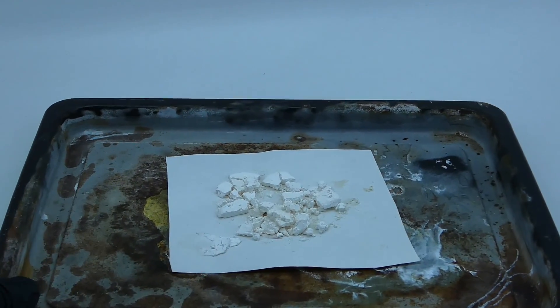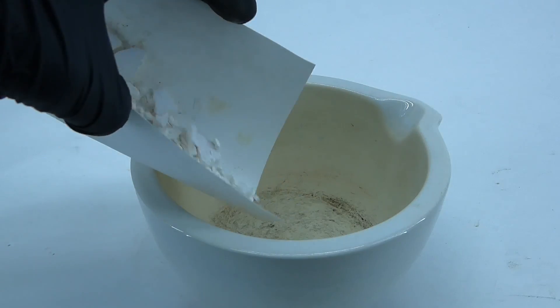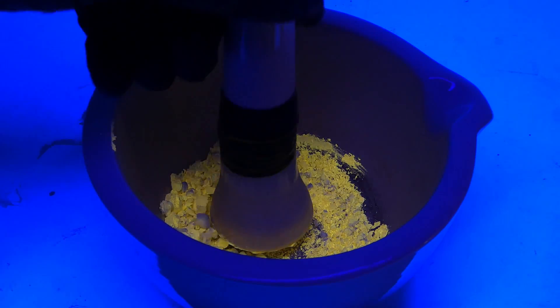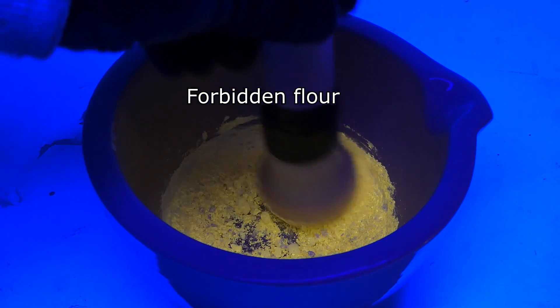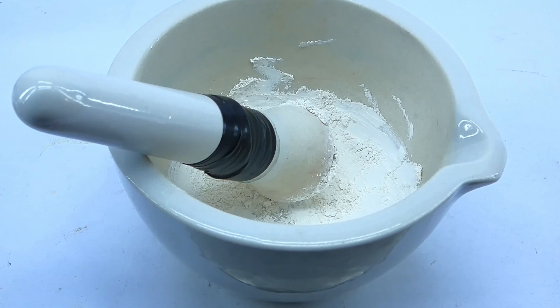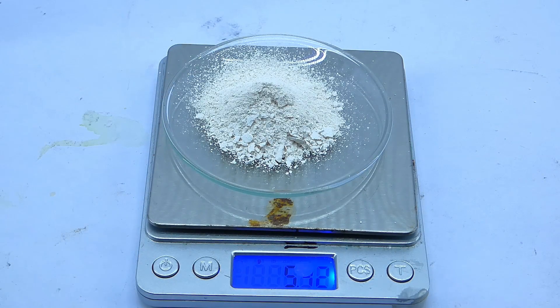I took it out of the oven, and now it was time to crush it into a fine powder. To do that, I used my trusty mortar, and under UV light, the grinding looked very nice. After I was done, I was left with a lot of a very fine white powder, which I now wanted to weigh to know how much I have. It turns out that I have about 5.4 grams of it, which is a pretty nice amount.